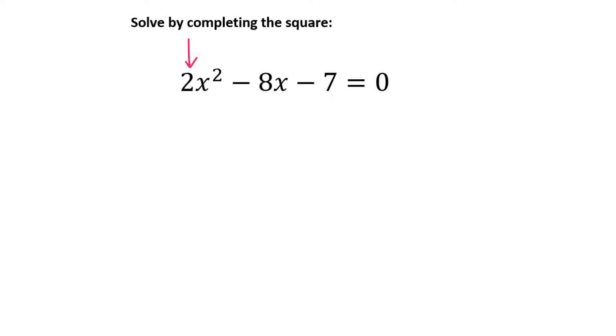You know how in all the previous examples we've done, they've all looked something like this, or maybe like this. See how the number in the front is always a 1? That is a golden rule for completing the square.